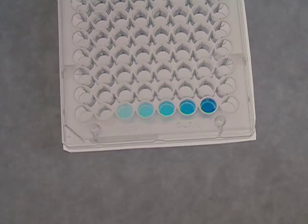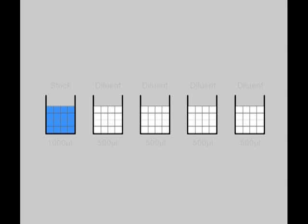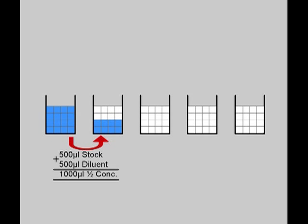Now, to look in detail at how the stock has been diluted within this series. When the stock is mixed with the first diluent well, half of the total volume of the solution is the original stock. Therefore, a 1 in 2 dilution has been created.